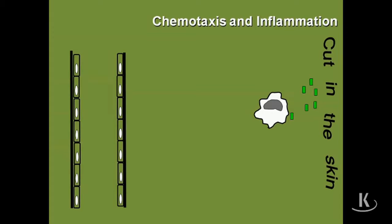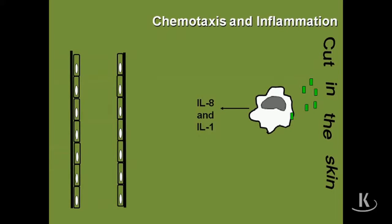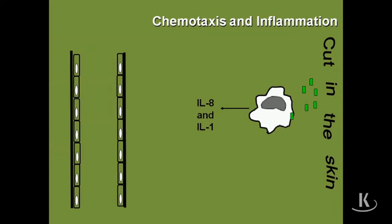The macrophages are activated by phagocytosing the bacteria and begin making cytokines. I have two listed here as a reminder: interleukin-8, being the most important chemotactic cytokine, and then your pro-inflammatory cytokines — IL-1, IL-6, and TNF-alpha.